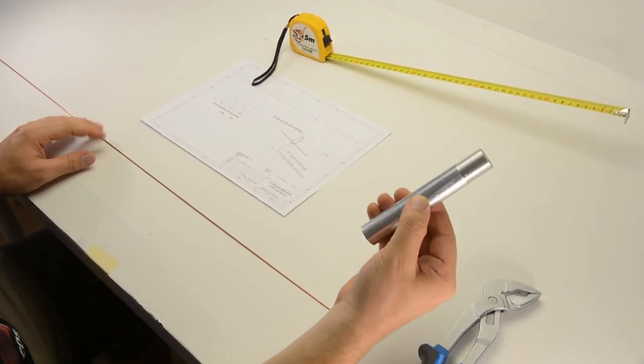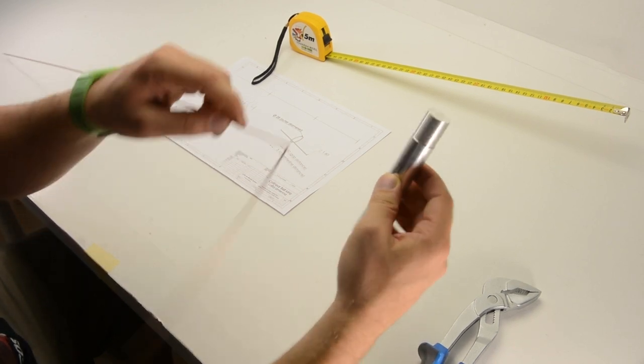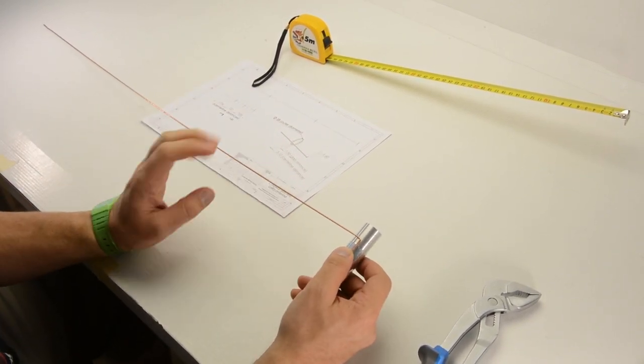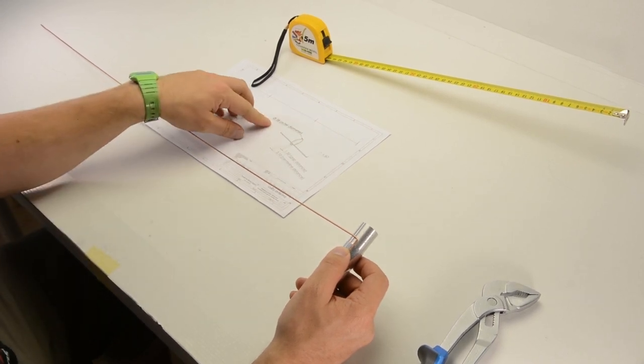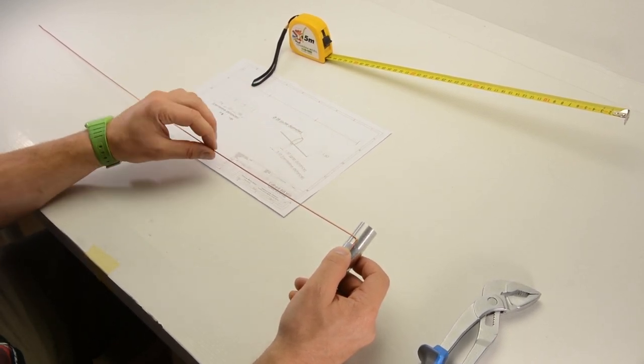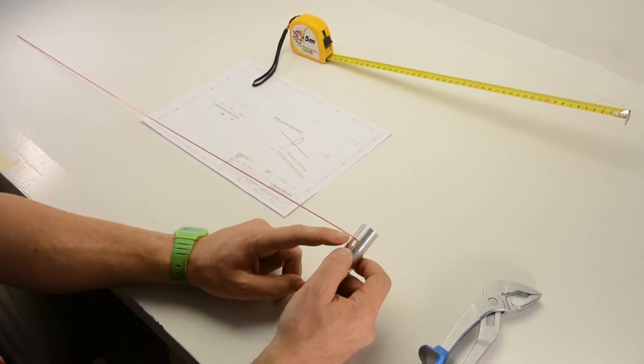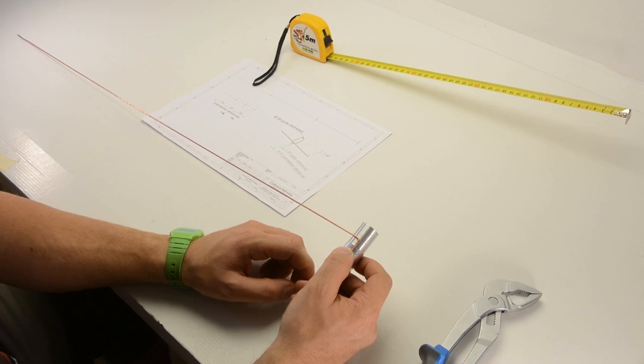Then we will take our rod of the appropriate diameter. So for this wire specifically to get 28 mm outer diameter of the loop we need a 21 mm diameter rod and that you determine experimentally.